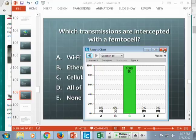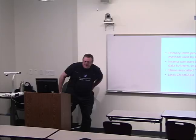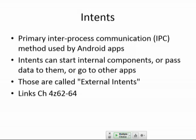Intents are the equivalent of remote procedure calls in a Windows environment. If you have one app on your phone and it wants to send data to another app to request a service, it does it with an intent — a message sent from one app to another. If your app wants to receive intents, you have to specify them as external intents; otherwise, you can only receive intents from inside your own app.